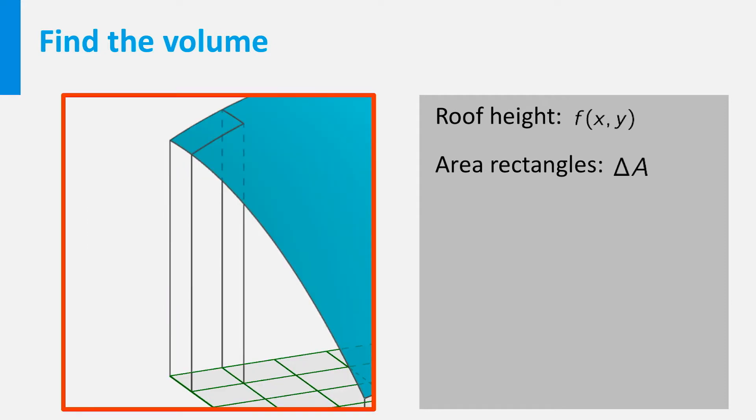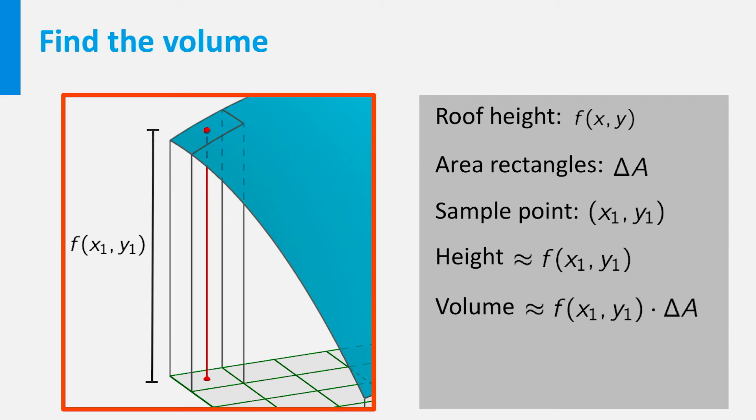Let's zoom in to one such rectangle. We can draw an imaginary column between this rectangle and the roof. Pick a sample point in the rectangle, say with coordinates x1, y1. Then the height of the column is roughly equal to f of x1, y1. The volume is roughly equal to this height times delta A.